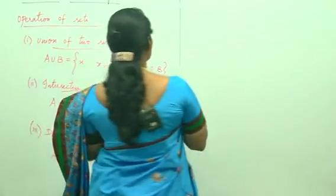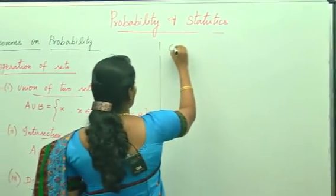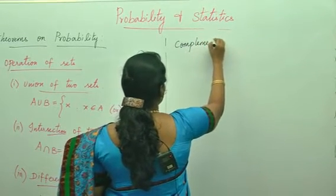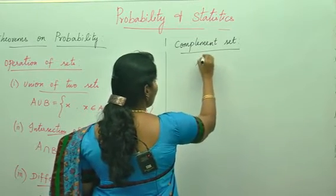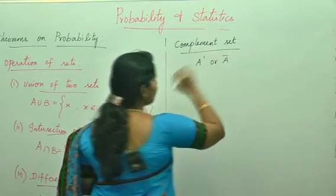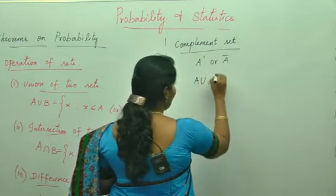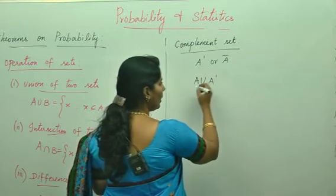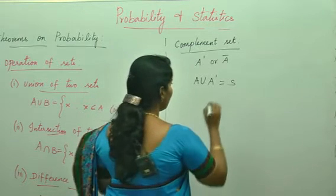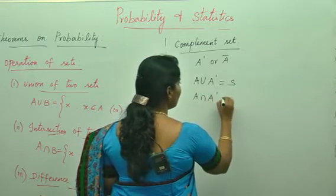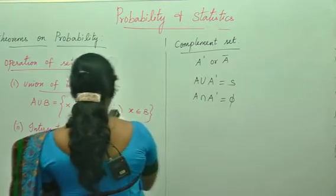Next is the complementary set. We denote it as A dash or A bar. A union A dash will give you S — that is the certain event. A intersection A dash will give you the null set — that is the impossible event. These are the basic operations on sets.